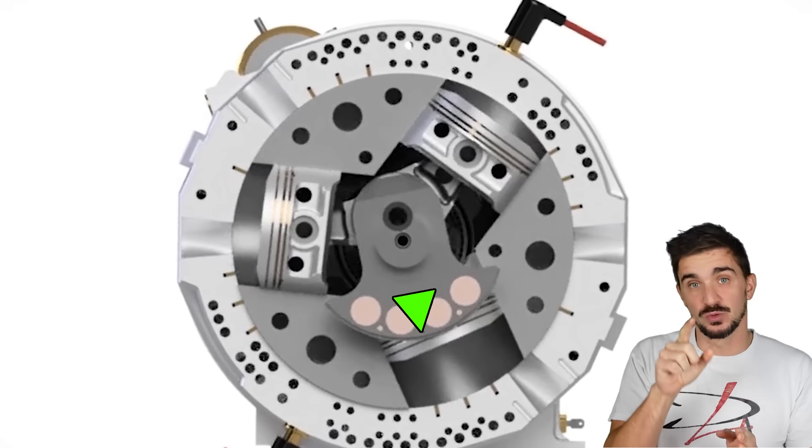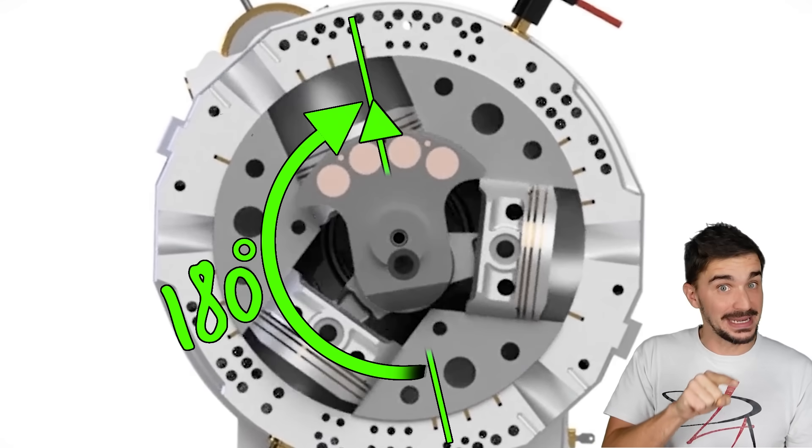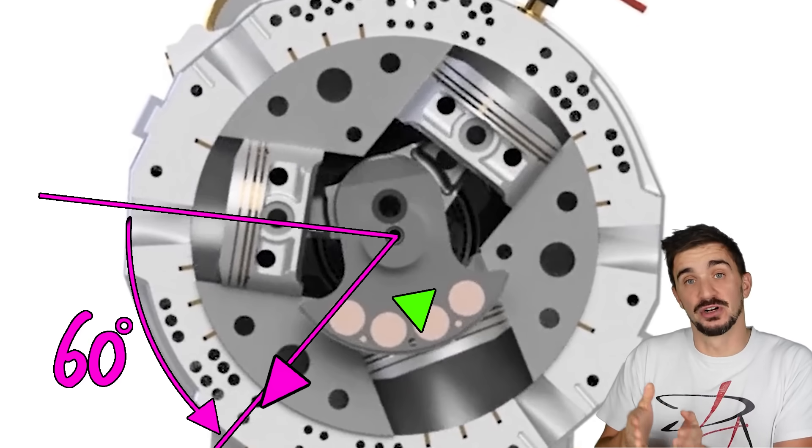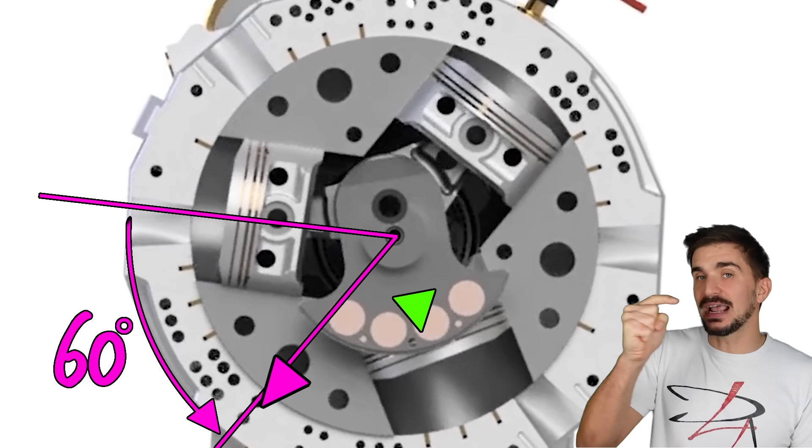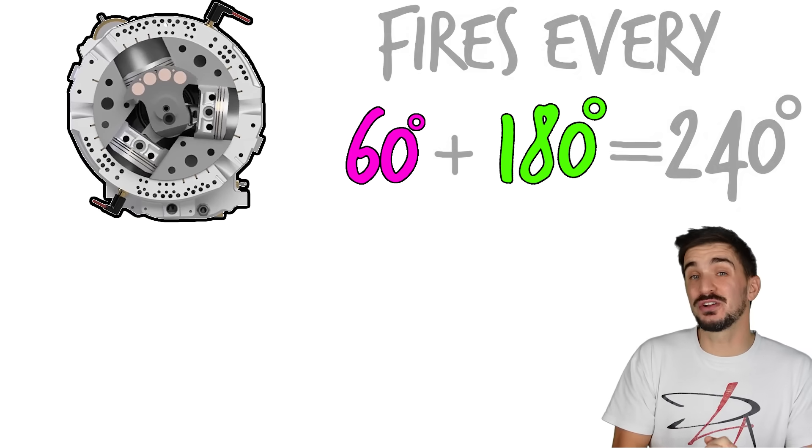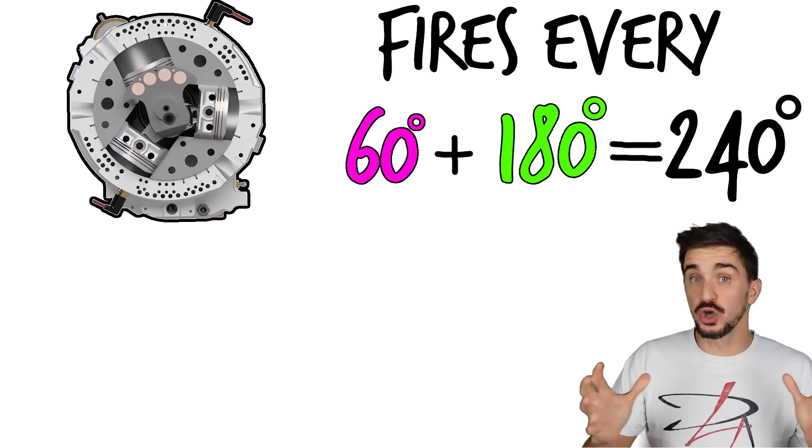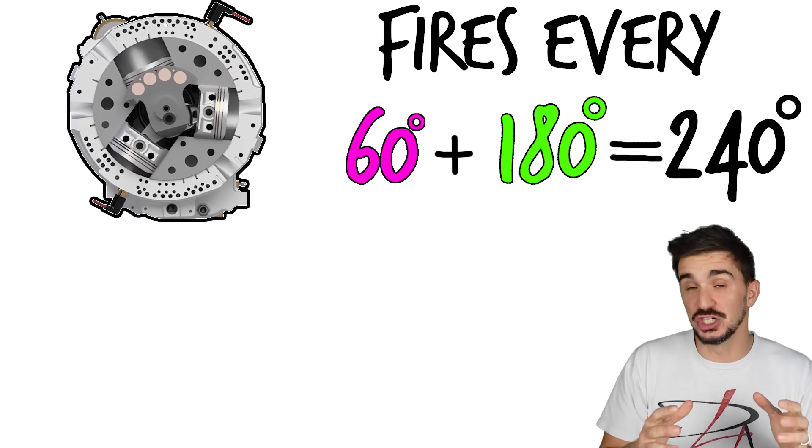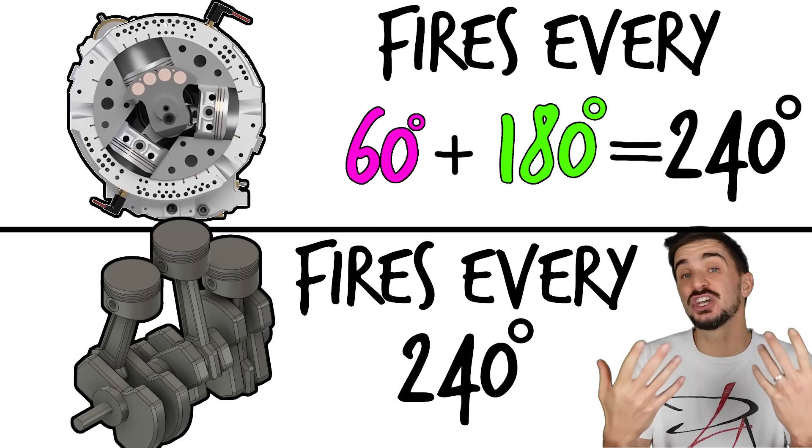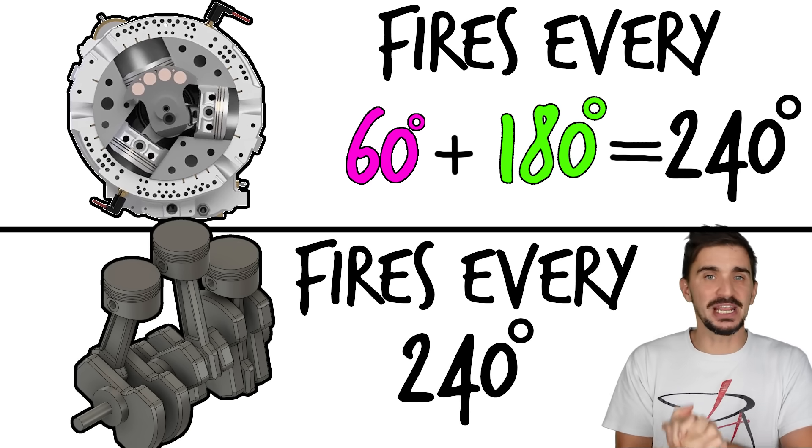What's very important to know is that the crankshaft rotates three times faster than the cylinder block. So when the crankshaft does 180 degrees in one direction, the block is going to do 60 degrees, that's one-third of the speed, in the other direction. And that means that the engine fires every 240 degrees of total relative engine rotation. And yes, 240 degrees, that's the exact same firing interval as a conventional inline three-cylinder engine.